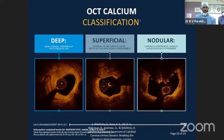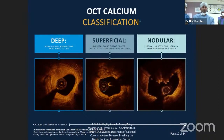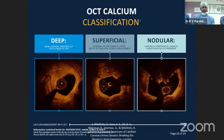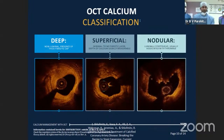Different types of calcium help us choose our strategy. Deep calcium — seen from 6 to 11 o'clock, away from the lumen — cannot be managed by atherectomy, so you need either a compliant balloon or IVL. Superficial calcium, between 11 and 3 o'clock with a clear demarcated line close to the intima, can be addressed with rotational or orbital atherectomy. Nodular calcium on the extreme right requires rotational atherectomy only.